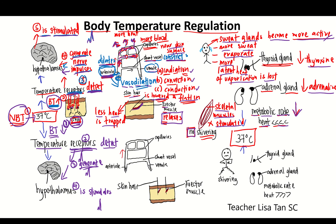The nerve impulses stimulate vessel constriction of arteriole in the skin — the arteriole narrows, and the shunt vessel relaxes, meaning more blood can flow through the shunt vessel instead of flowing to the blood capillaries. So less blood flows to the blood capillaries near the skin surface. That means you want to conserve heat, so less heat is lost by radiation, convection, and conduction.